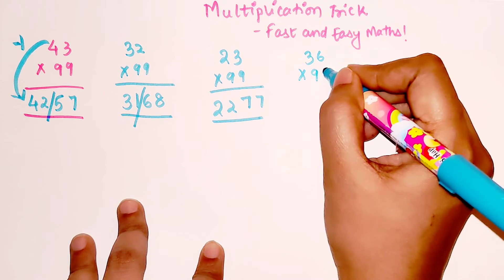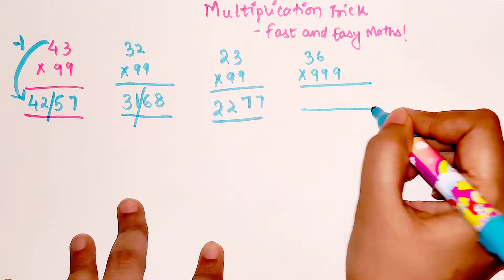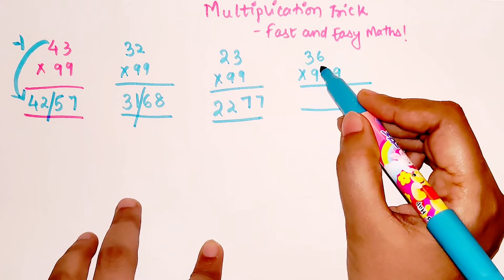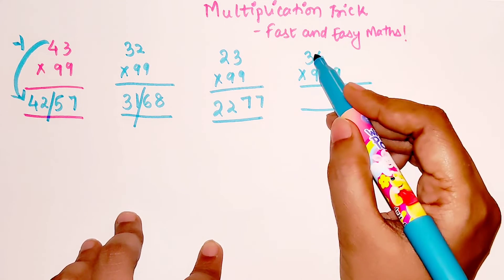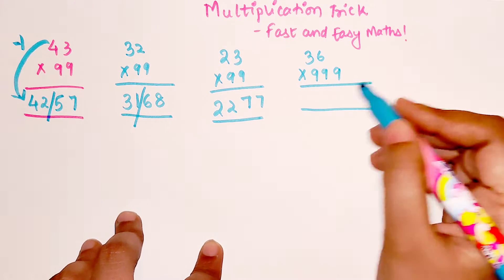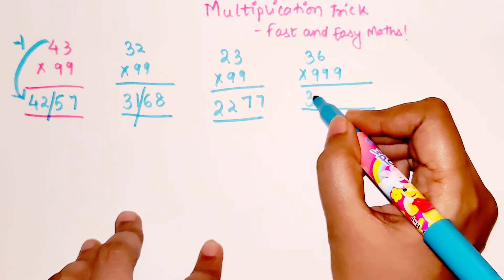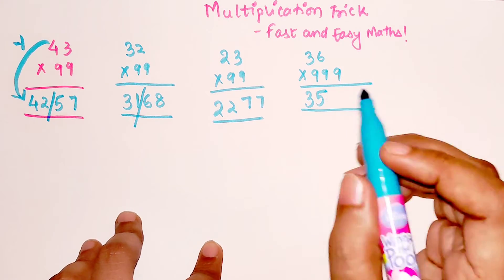If 36 was there and we had 999, 3 nines, in that case what you would have done is, since the multiplicand has only 2 digits and the multiplier has 3 nines in it, the first rule is the same only. You do 35. Why? Because 36 minus 1 gets you 35.